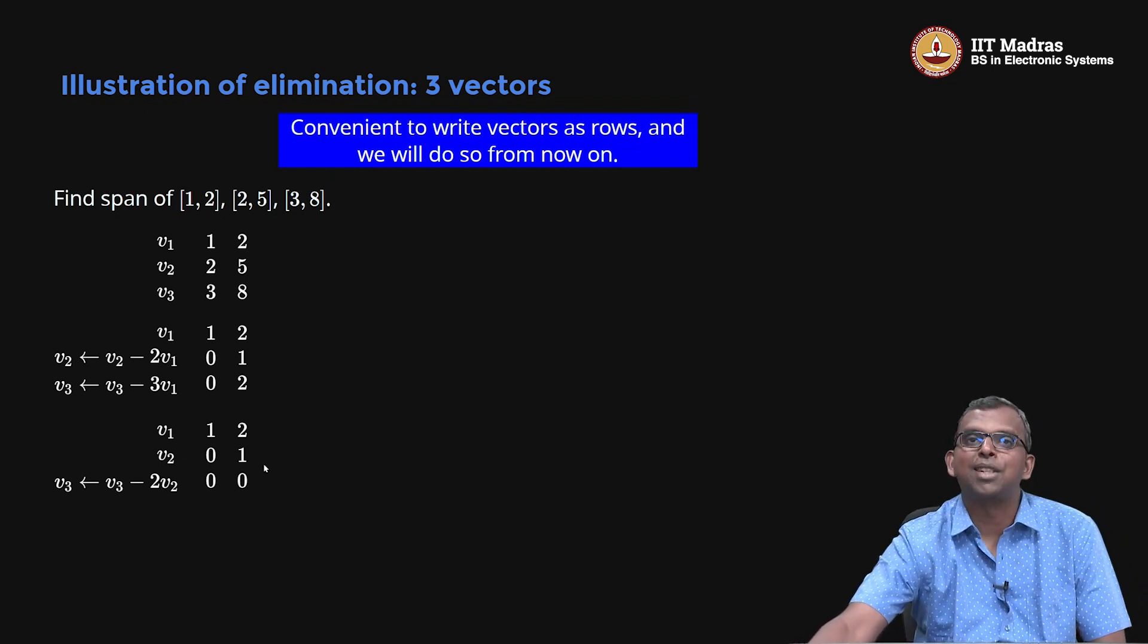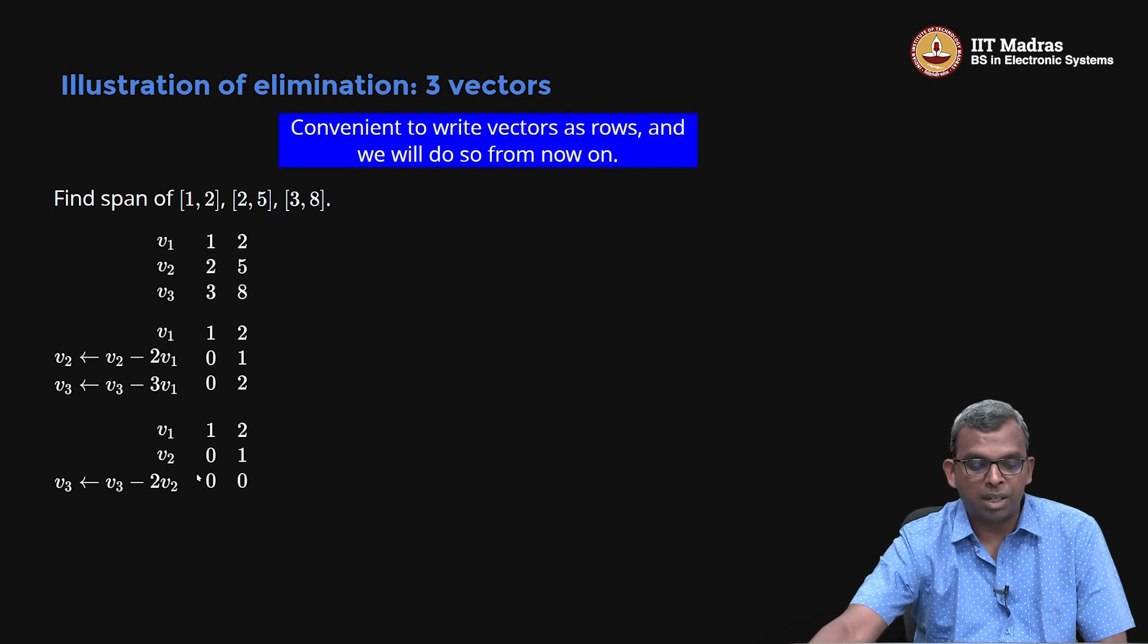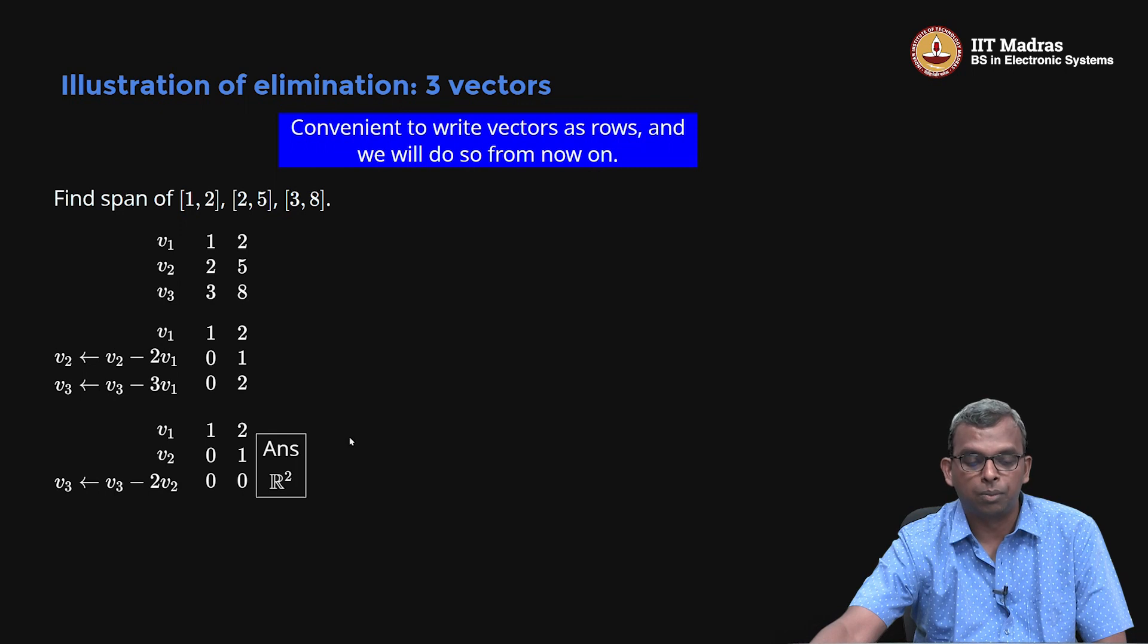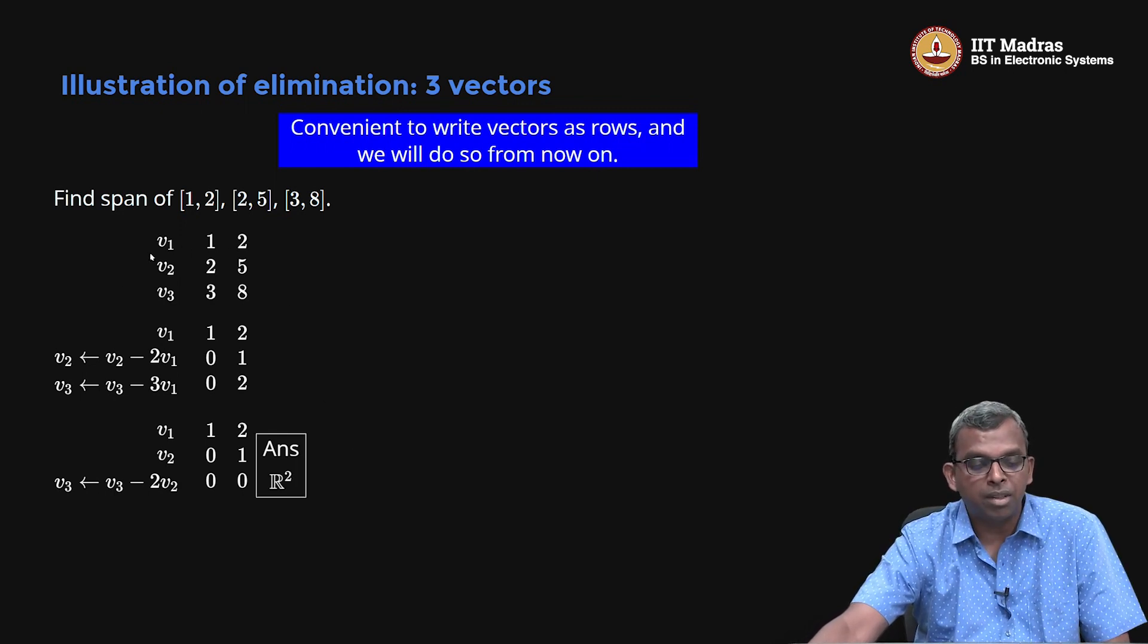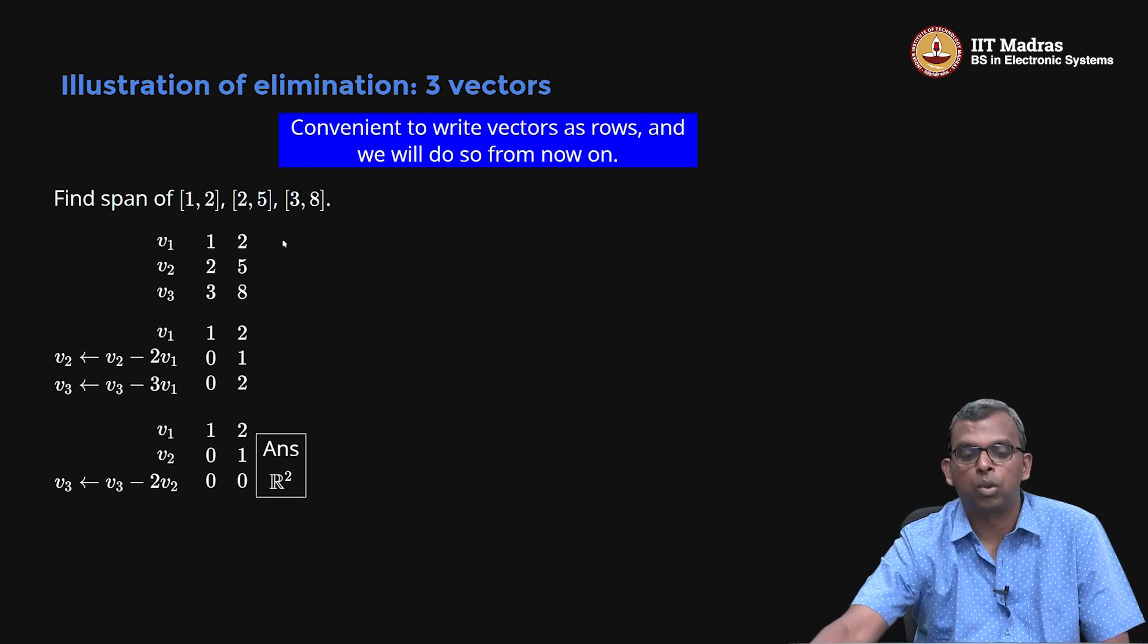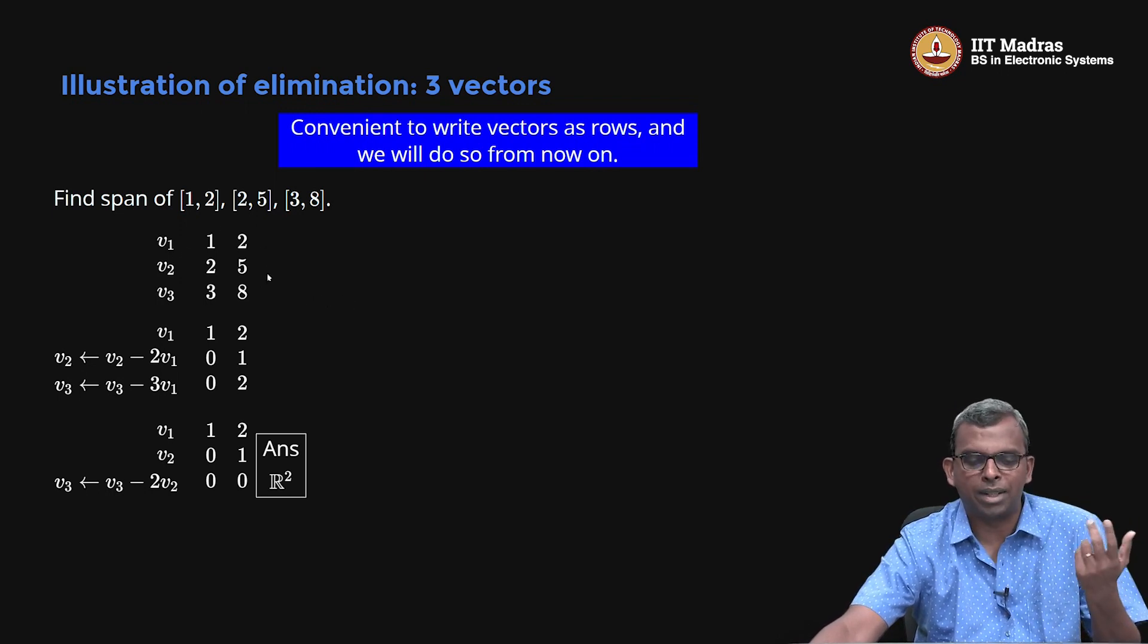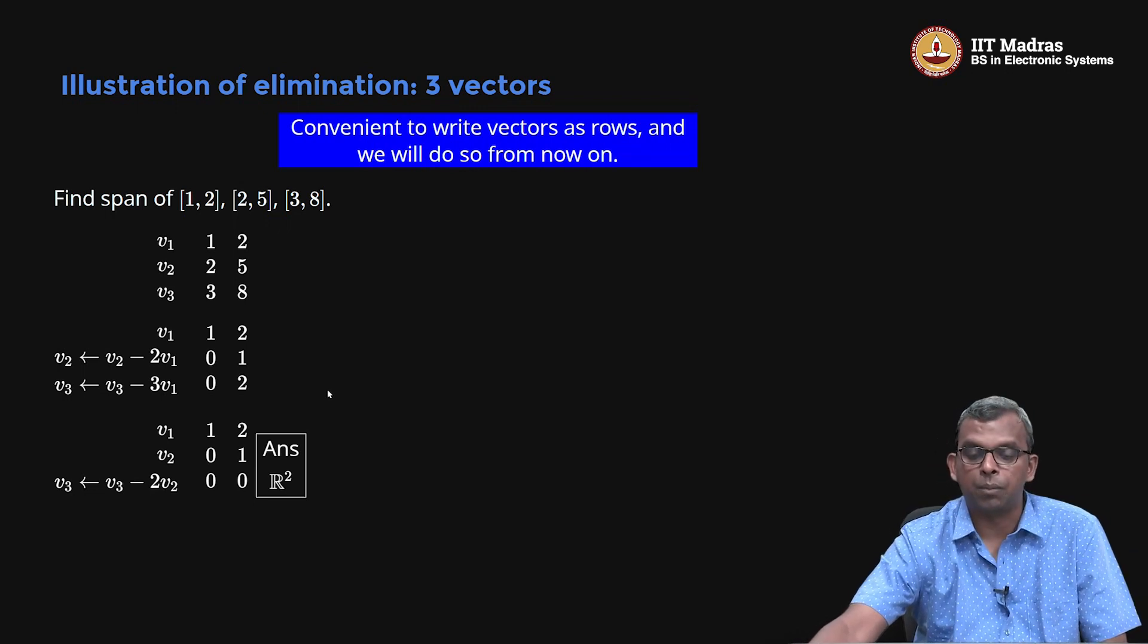Now the span is very easy to figure out. The 0, 0 plays no role in the span. What is the span of 1, 2 and 0, 1? R². Easy to write down. So notice how elimination even when you have three vectors beautifully gives you the answer for the span. In exact examples it is very easy to do. Same thing we did with two vectors also, for three vectors also you can continue to do the same thing.